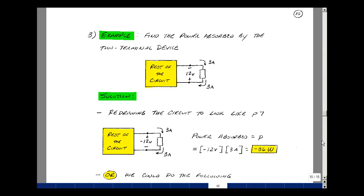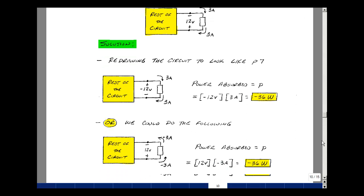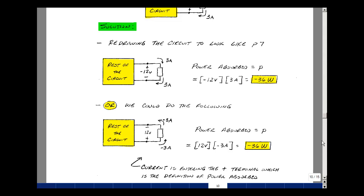Now we can do this problem another way and let's just take the straight definition of power absorbed. And that is that current enters the plus terminal and leaves the minus terminal. Original problem, we had current flowing in this direction. So for the current to enter the plus terminal and leave the minus terminal, I need to change the direction of my initial definition.